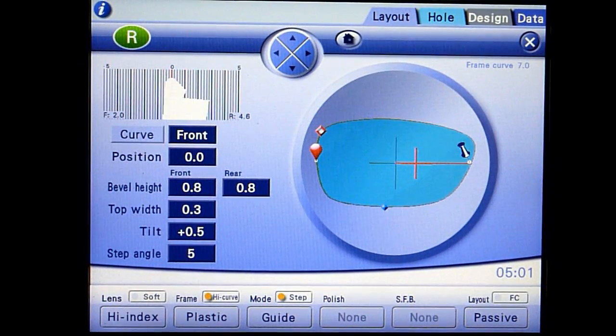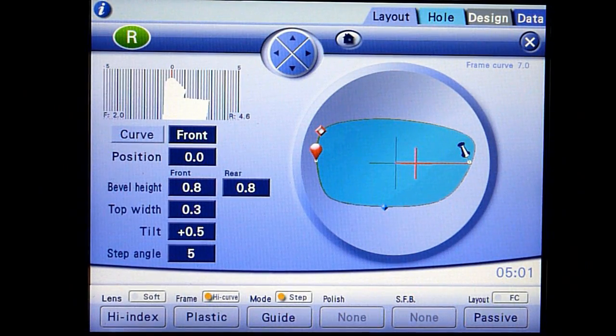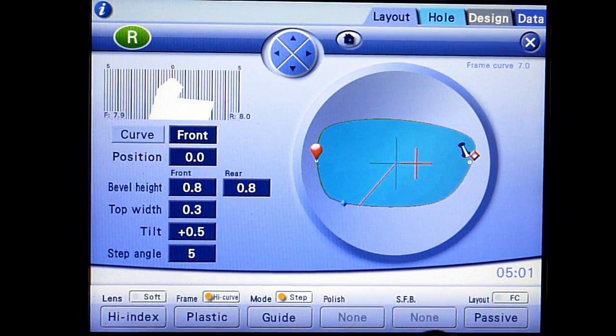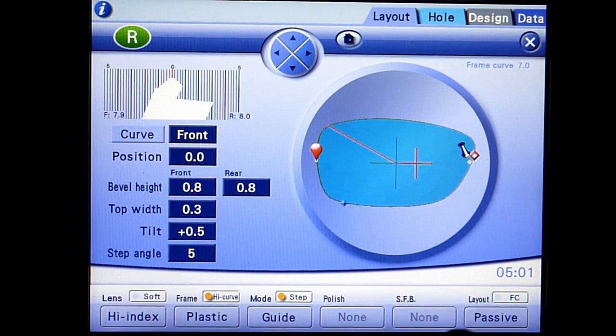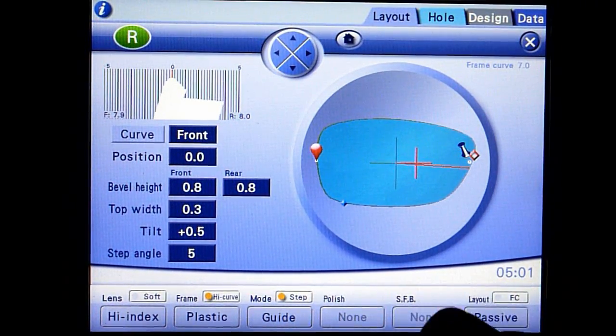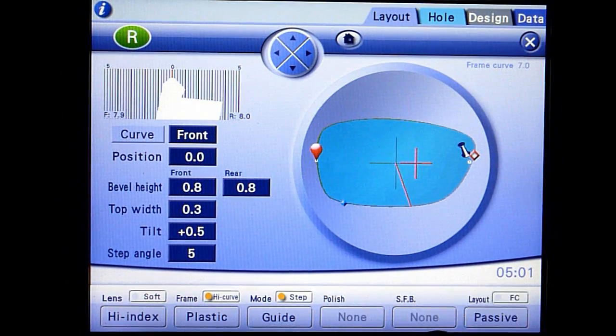After the roughing cycle, the edger will pause and the bevel simulation screen will appear showing the profile of the lens. Turn the jog dial to view the bevel placement and adjust the curve, tilt, or position values to get the desired result.